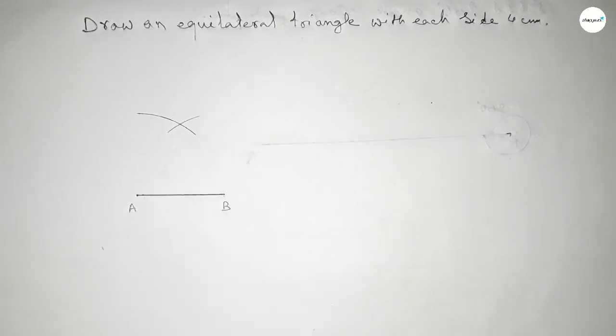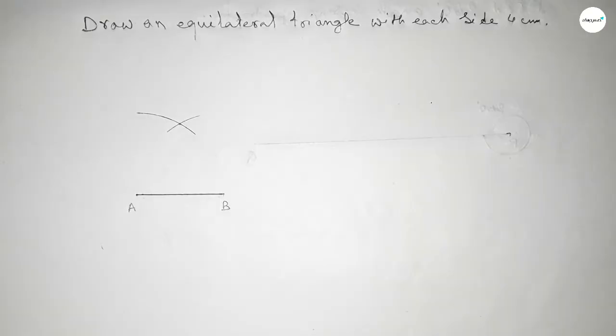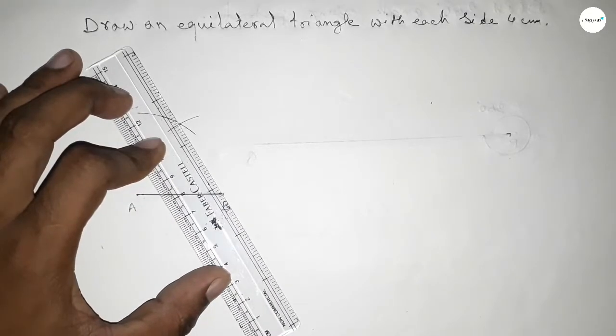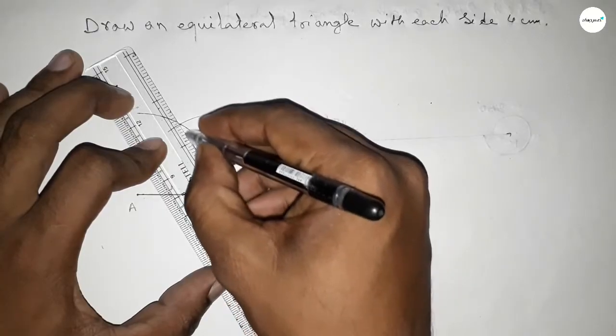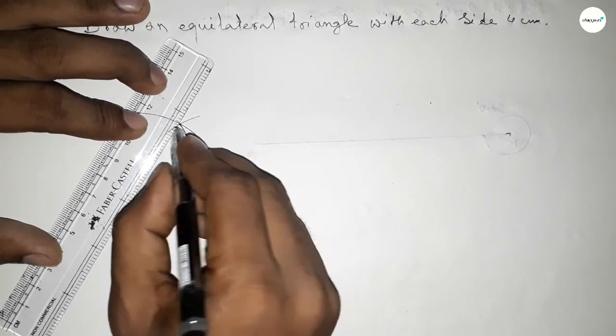And cutting here. Both curves intersect at a point. Now joining this side and this side to get an equilateral triangle with side 4 centimeters. This is point C.